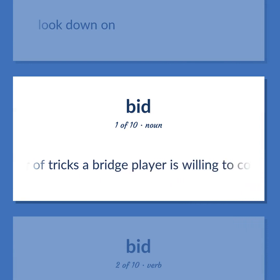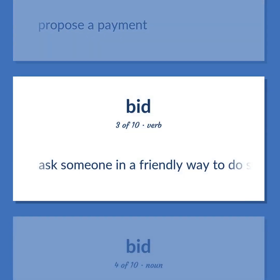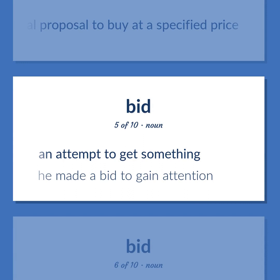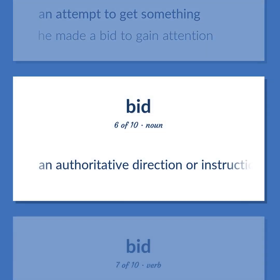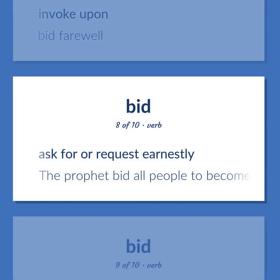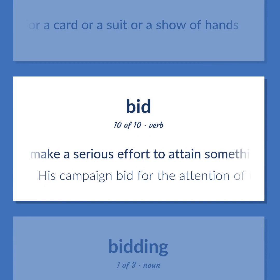Bridge: The number of tricks a bridge player is willing to contract to make. Propose a payment. Ask someone in a friendly way to do something. A formal proposal to buy at a specified price. An attempt to get something. He made a bid to gain attention. An authoritative direction or instruction to do something. Invoke upon. Bid farewell. Ask for a request earnestly. The prophet bid all people to become good persons. Make a demand; ask for a card or a suit or a show of hands. Make a serious effort to attain something. His campaign bid for the attention of the poor population.